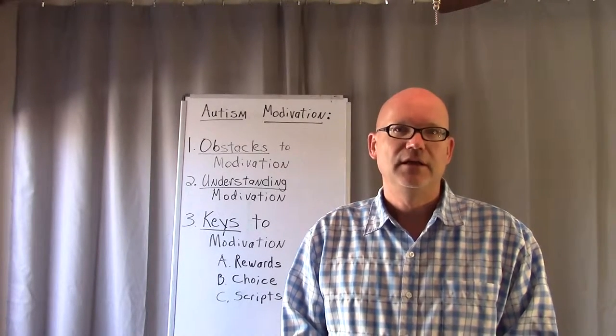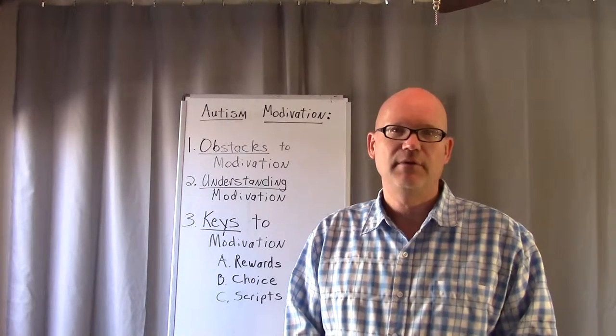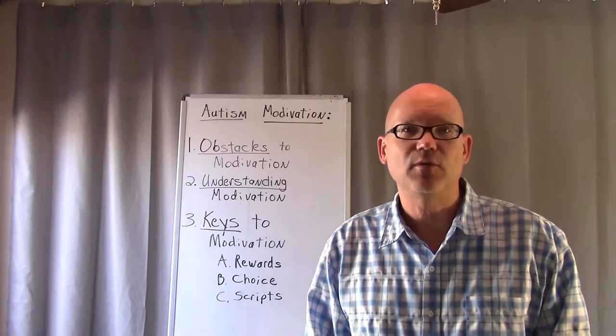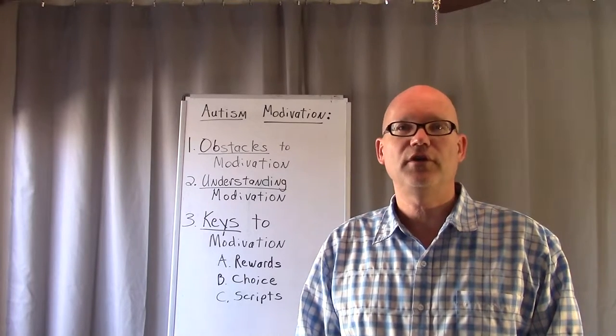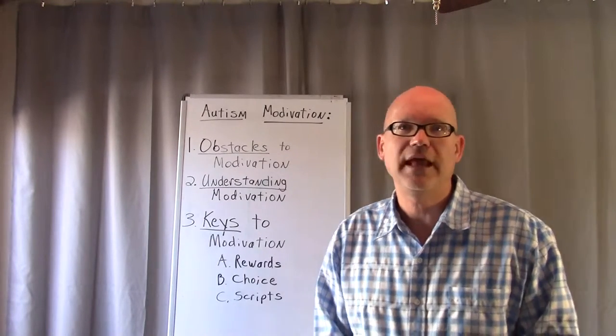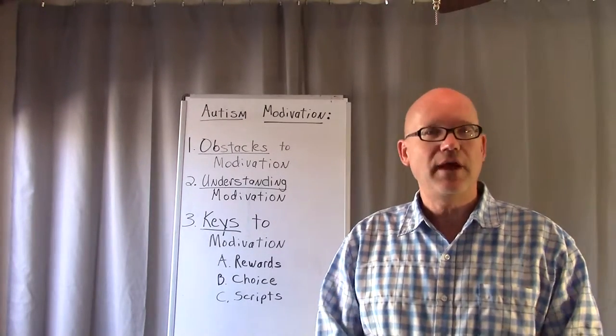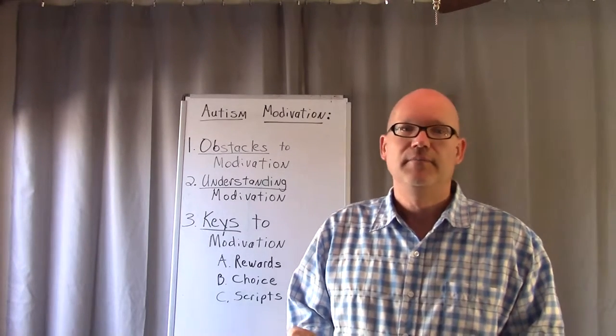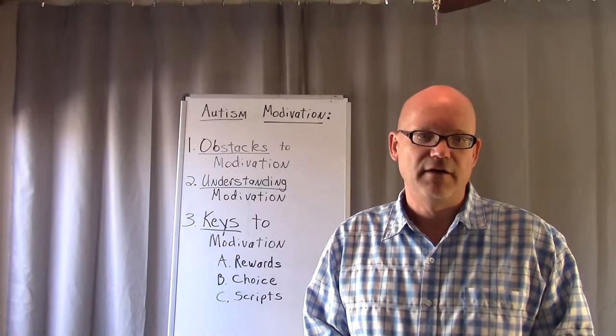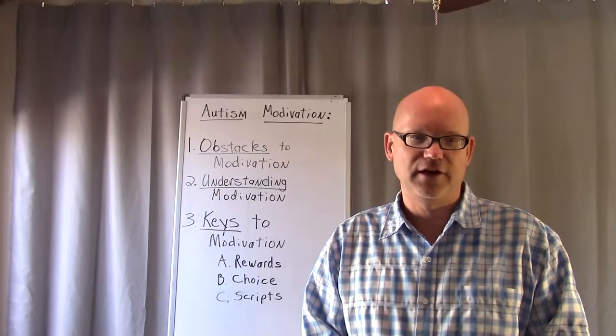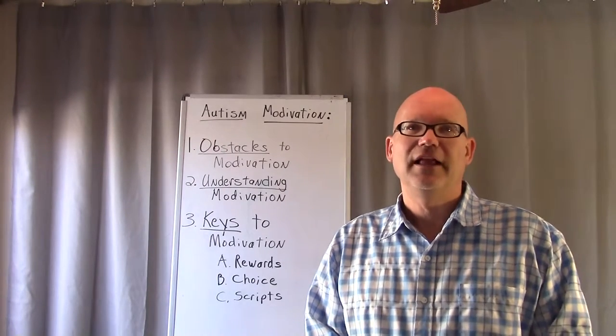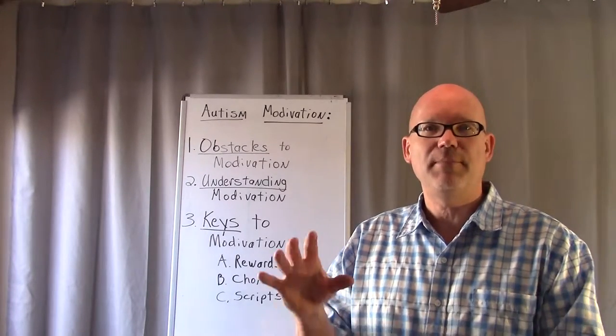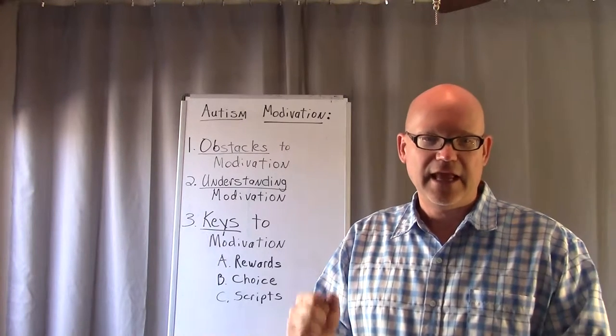One of our first obstacles to motivation is you have to understand where someone with autism is coming from. Behavior is communication. We'll refer to this in future series because it's very important. When you see a certain behavior, if you can understand the reasoning behind it, they're actually communicating through that behavior. Another thing is individuals with autism are very logical thinkers. Many times they'll get stuck on a certain subject. Their brain will click like a computer and lock up on one segment and they can't get off of that idea.